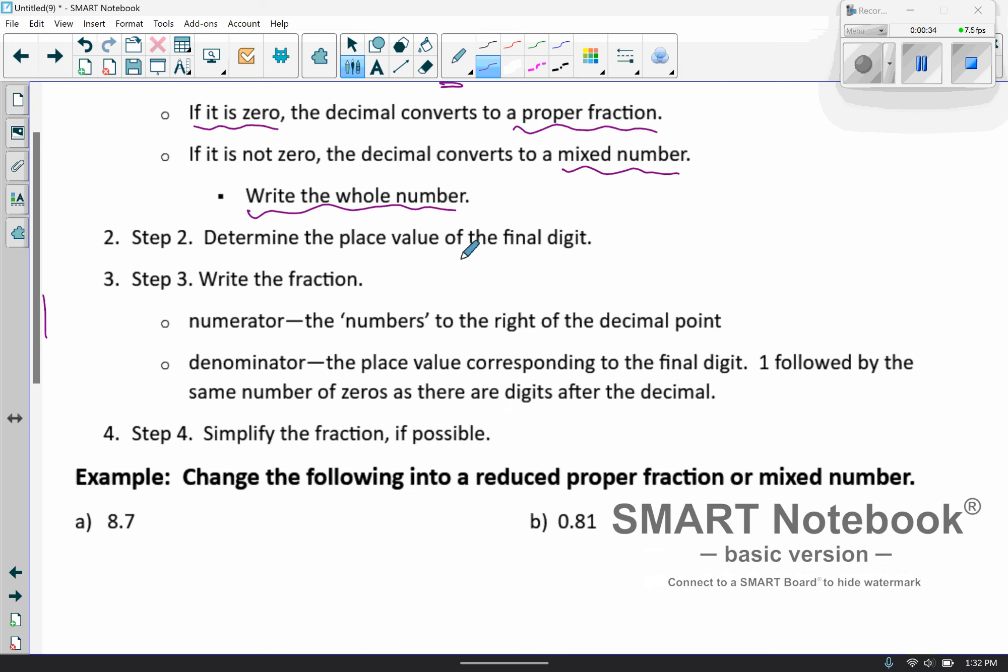So step two, determine the place value of the final digit. Then write the fraction. The numerator is going to be the number that is to the right of the decimal point. And the denominator is going to be the place value corresponding to the final digit. So basically, the denominator is going to be a one followed by the same number of zeros as there are digits after the decimal place. That will make sense once we look at one of these.